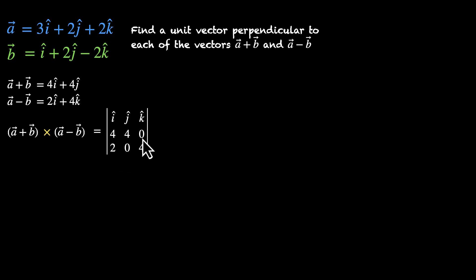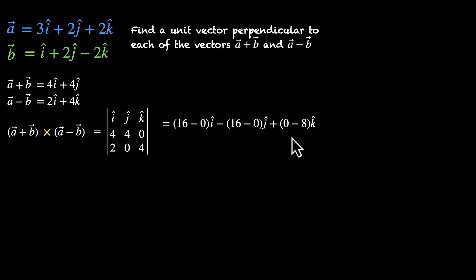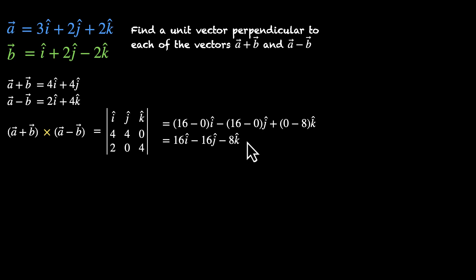Expanding: i-cap times (16 minus 0), minus j-cap times (16 minus 0), plus k-cap times (0 minus 8). So this becomes 16i-cap minus 16j-cap minus 8k-cap.